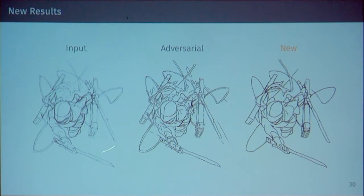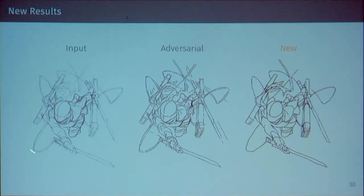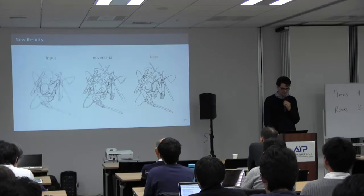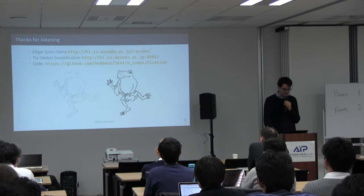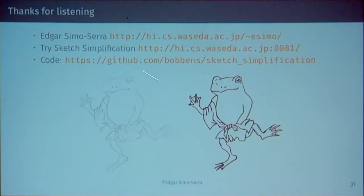We have some new results I'm not able to present today. For example, on a much harder rough sketch, our previous adversarial approach gives a certain output, while our current approach is giving something better — it handles intersections and parallel lines, reduces them fairly well in the leg area, and is also able to generate the hand. This is quite different from what we've been doing up until now, and hopefully I'll be able to present it in a few months. All papers and materials are on my website; you can try it online, and the code and models are available.